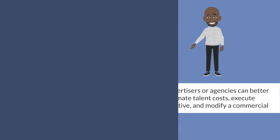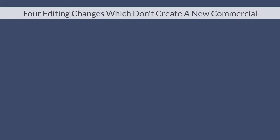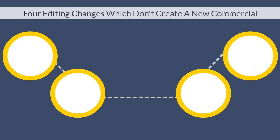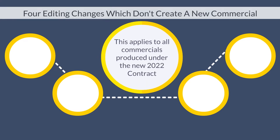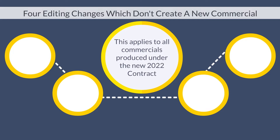Let's now talk about the new editing structure. First, there are four types of editing changes that do not create a new commercial. This applies to all commercials produced under the new 2022 contract, including those produced under the Social Media YouTube Waiver.